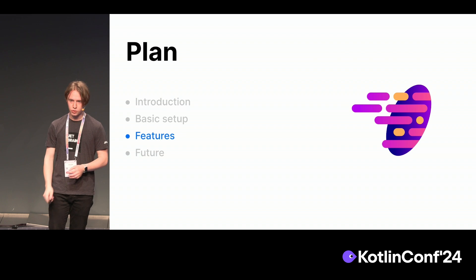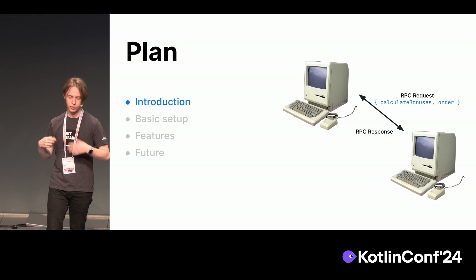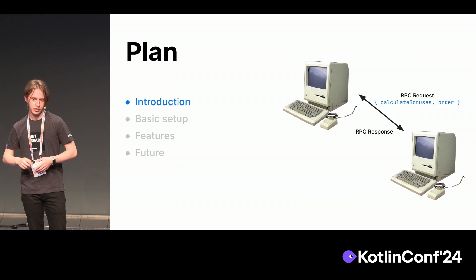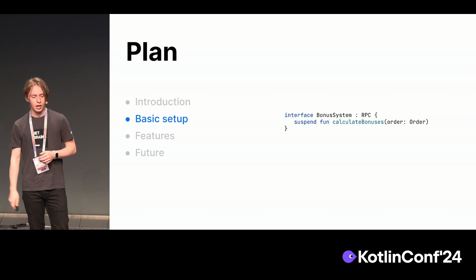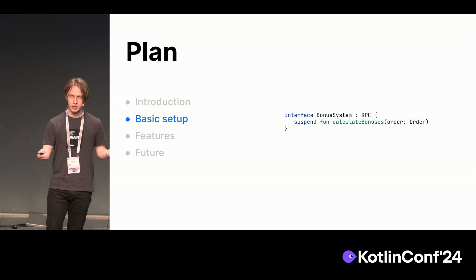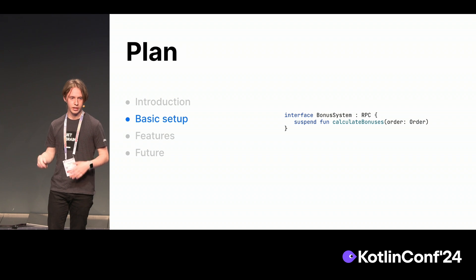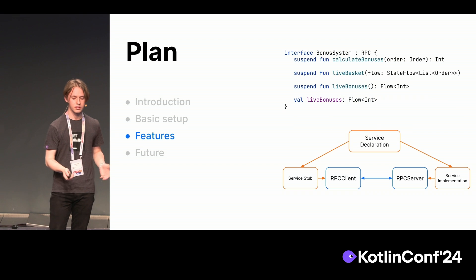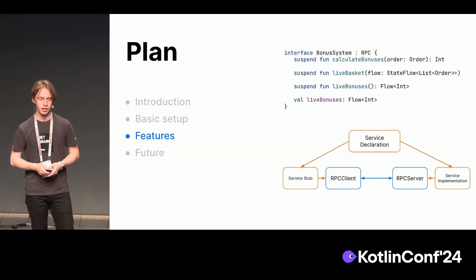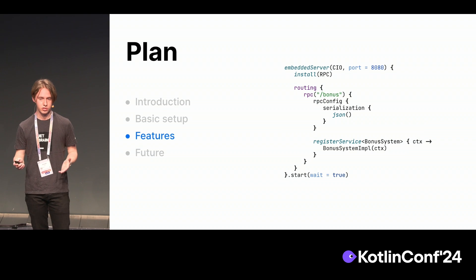Let's quickly recap. We had our introduction about what RPC is and how it can be used for communication between services — you want to call these functions without all the headache, just using plain Kotlin. We have our basic setup, a really easy setup where you define your services as Kotlin interfaces and call the functions like regular Kotlin code. And we have features: flows, fields, and a structure that allows smooth integration with different things. We already have an integration with K2 that you can try out.